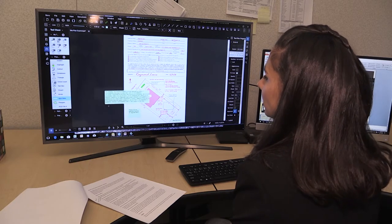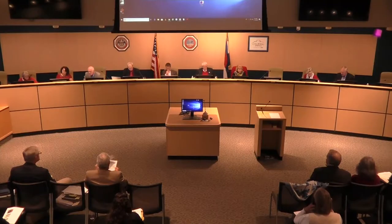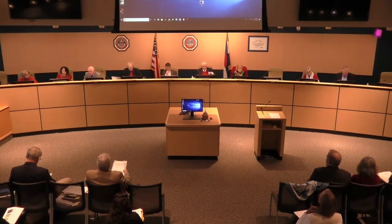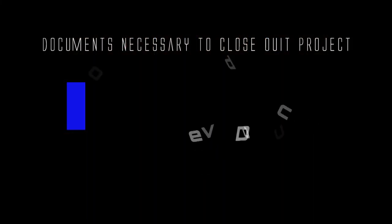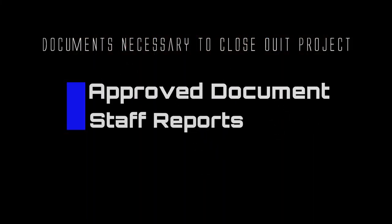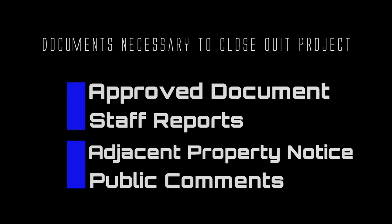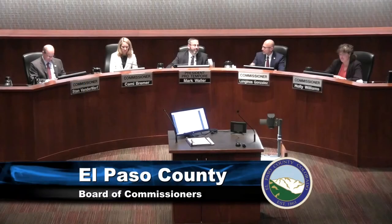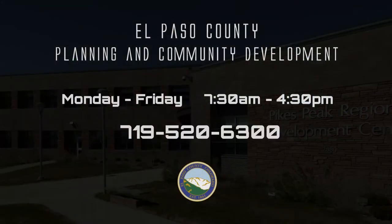Once all comments have been addressed to the satisfaction of the reviewers, your application items will then either be ready for approval or ready to be scheduled for a public hearing. All documents necessary to close out the project, such as the approved documents, staff reports, adjacent property notice, public comments, and so on, will be uploaded online by the planner as an additional document. Most Type D applications require a hearing before the Planning Commission and Board of County Commissioners. Thank you for touring EDART with me today. We here at El Paso County Planning and Community Development hope that you enjoy using our exciting new system. If you ever have difficulties, we're here to help you Monday through Friday.